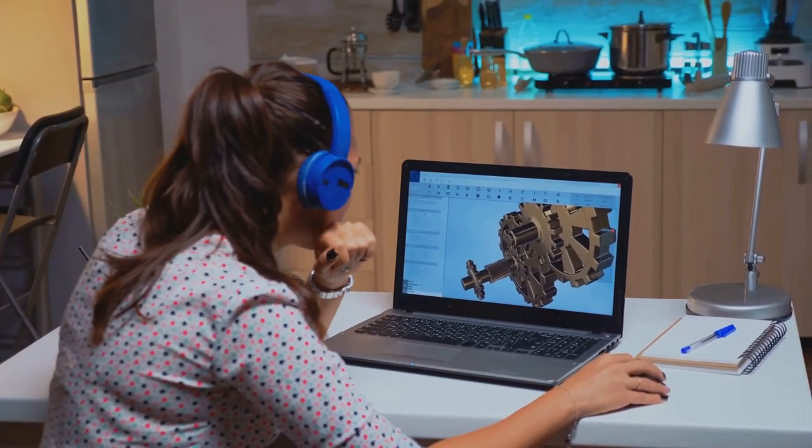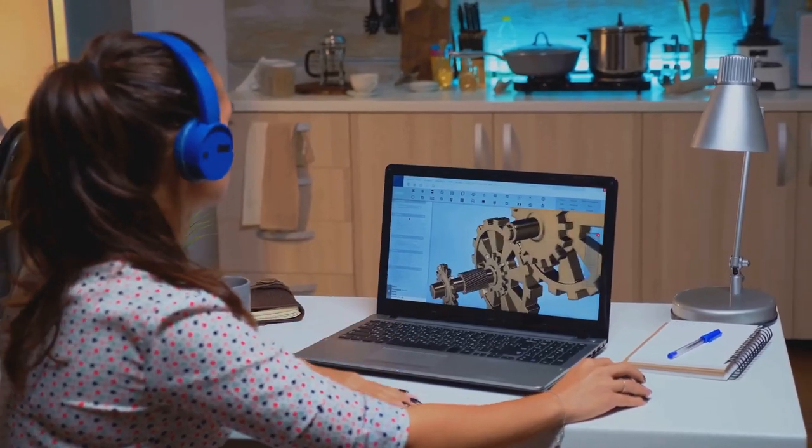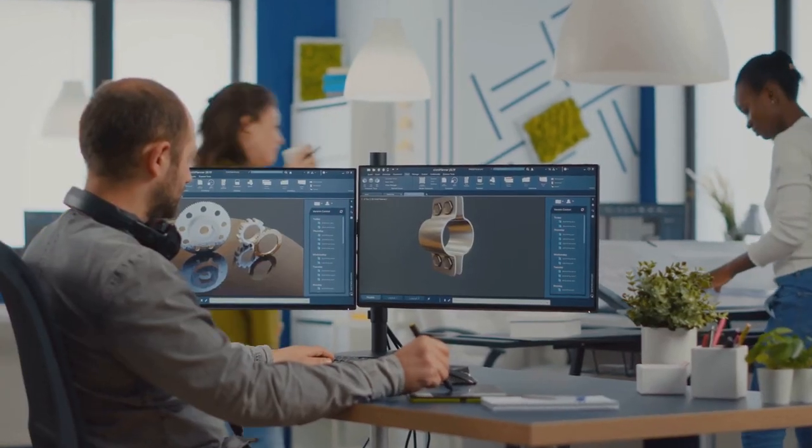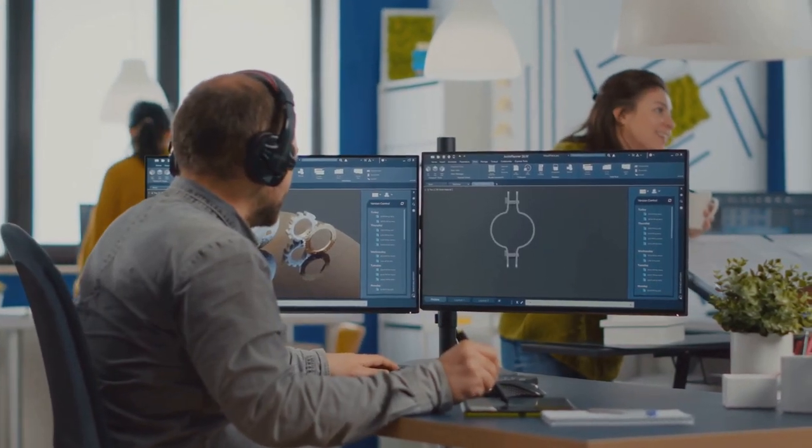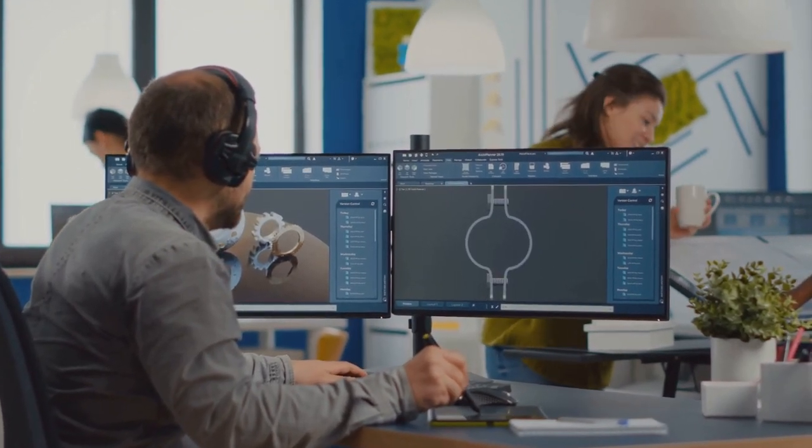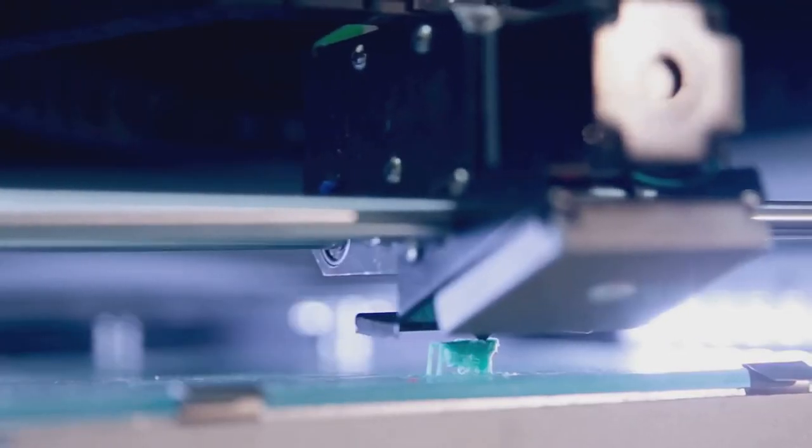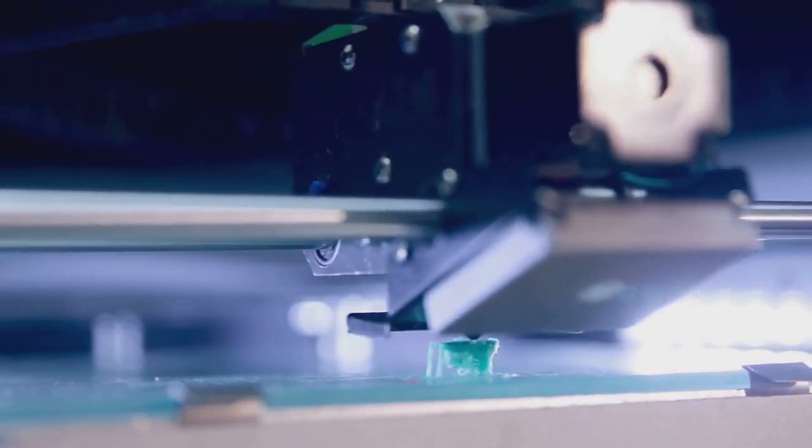The process begins with a digital design. This can be created using computer-aided design software, or even a 3D scanner for existing objects. This design is essentially a blueprint for the 3D printer, detailing what to make and how to make it. After the design is complete, it's time for slicing.